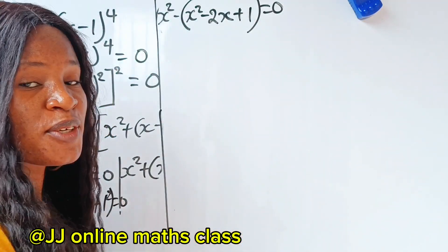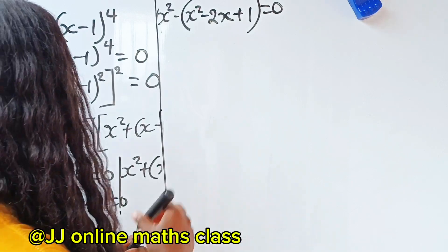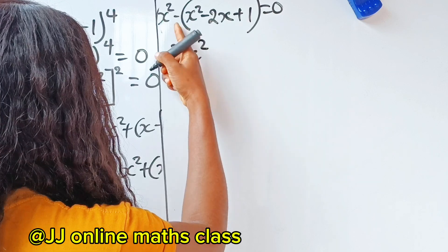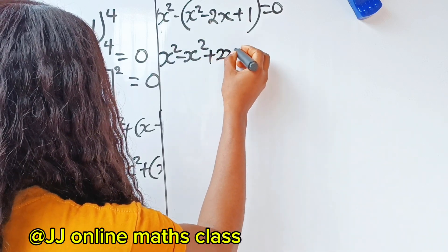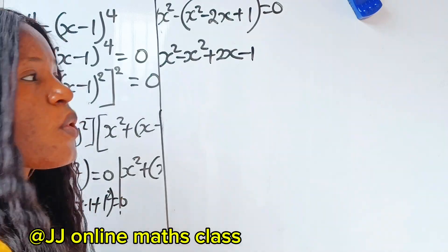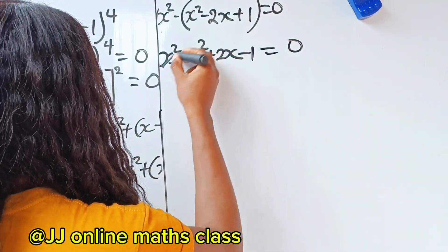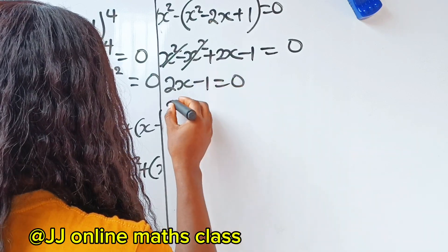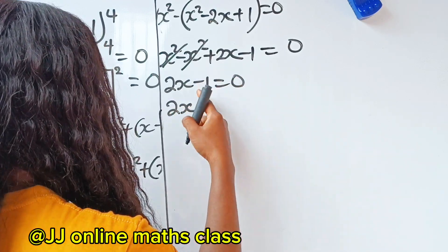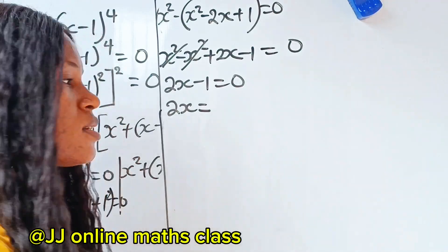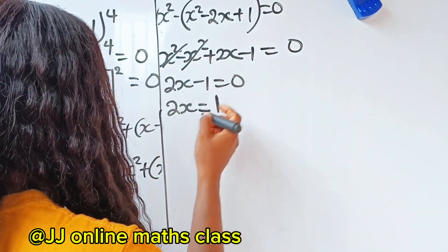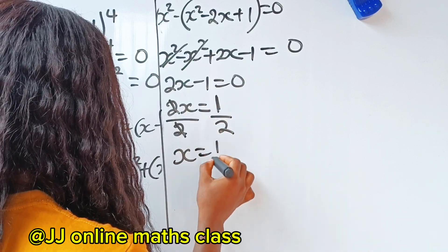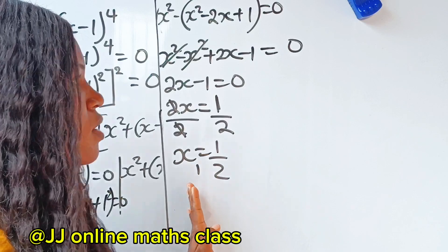Expanding Case 1: x squared minus x squared gives us 0, minus times minus 2x gives us plus 2x, and minus times plus 1 gives us minus 1, equal to 0. So x squared minus x squared cancels, leaving 2x minus 1 equal to 0. Therefore 2x equals 1, and dividing by 2, x equals one half. This is the first value of x.